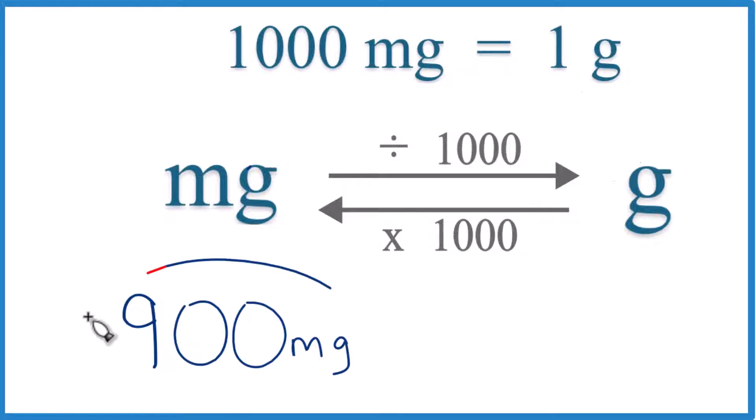If you need to convert 900 milligrams to grams, here's how you can do it. There are 1,000 milligrams in one gram. So 1,000 milligrams equals one gram, or one gram equals 1,000 milligrams. That's our conversion factor. We need that when we go from milligrams to grams or grams to milligrams.